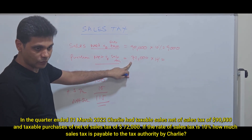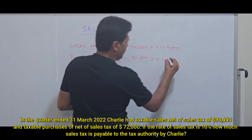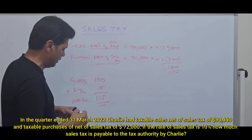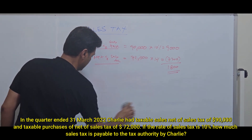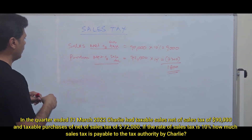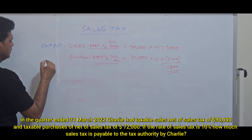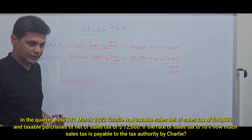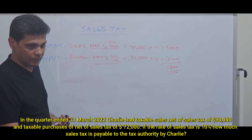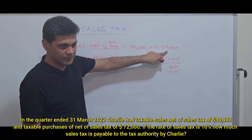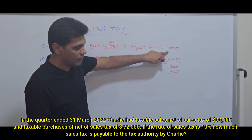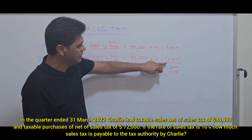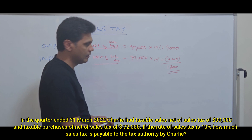On purchases of $72,000, 10% gives $7,200. So the net payable is $9,000 minus $7,200 = $1,800. Is this payable or receivable? It's payable. Why? Because the output tax — whatever taxes we collect from consumers — must be remitted to the tax authorities. The amount to be paid is higher than the amount recoverable, so $1,800 is payable.